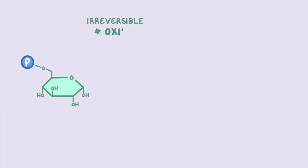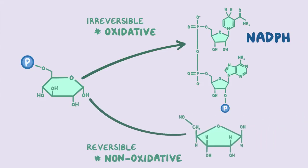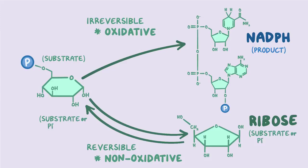The pentose phosphate pathway can be divided into two phases: an irreversible oxidative phase that ultimately yields NADPH, and a reversible non-oxidative phase that yields ribose. Irreversible means that the reaction can only go in one direction — substrate to product. Reversible means that the reaction can go in both directions, and the substrate and product can be interconverted into one another, depending on what the body needs more.